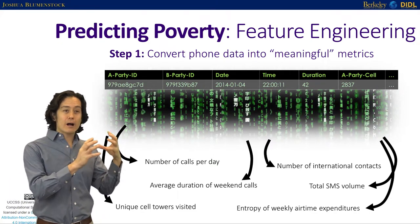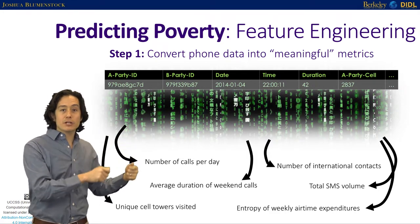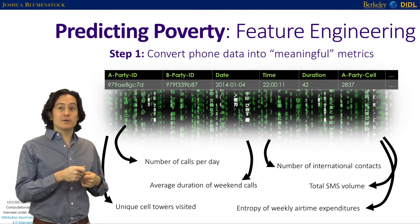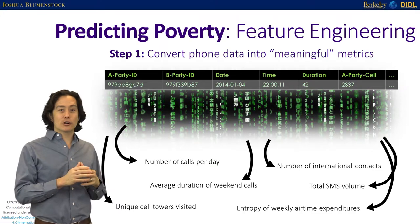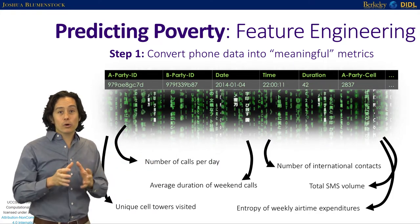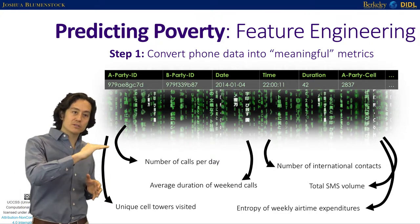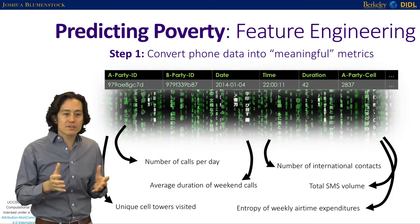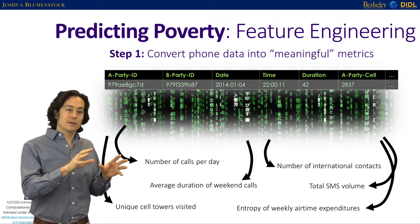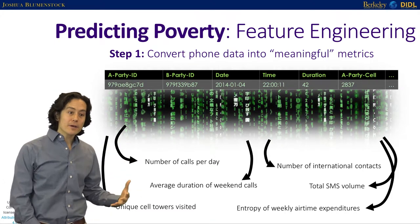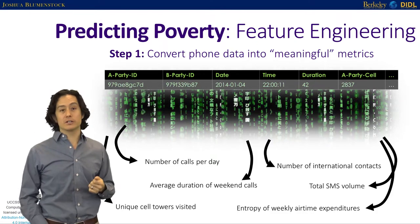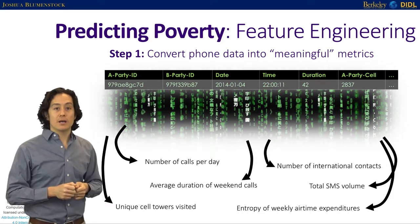We need an algorithm to derive all these metrics from the phone data. The core idea uses a concept from automata theory called a deterministic finite automaton — a structured way of recursively generating features. This algorithm generates tens of thousands of metrics of phone use more or less automatically, so we didn't have to sit around brainstorming each feature ourselves. At the end of this feature engineering step, we're left with tens of thousands of metrics describing phone use.